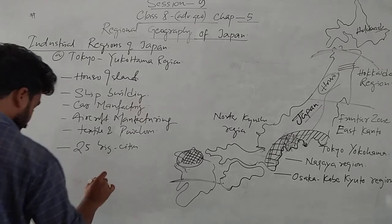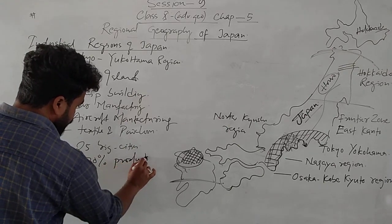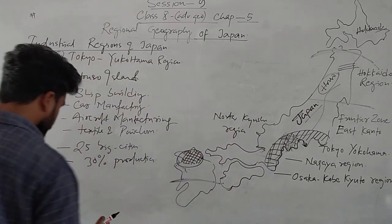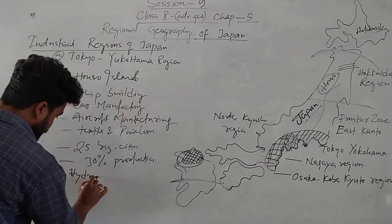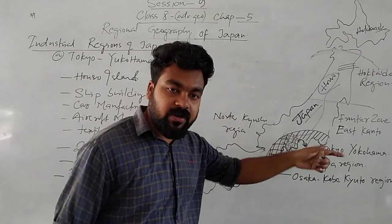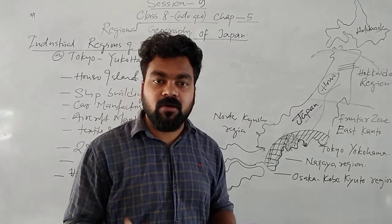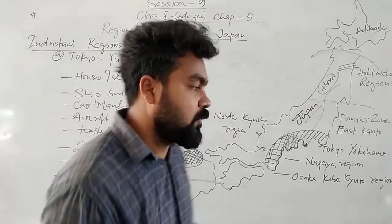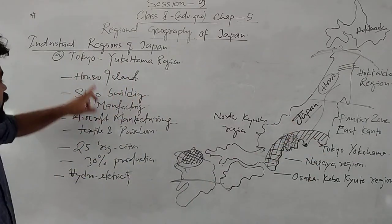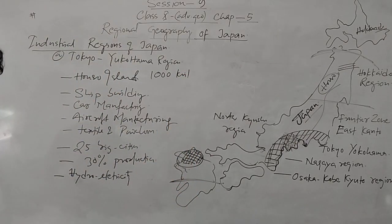Many big cities are in this region, including Tokyo, Yokohama, Osaka, and others. This Tokyo-Yokohama region provides 30% of the total production of Japan, as it is the largest industrial region. It also produces some amount of hydroelectricity, since there are highlands and mountains in the region where it is easy to construct dams. Most of Honshu island is covered by this region, which spans 1000 kilometers.